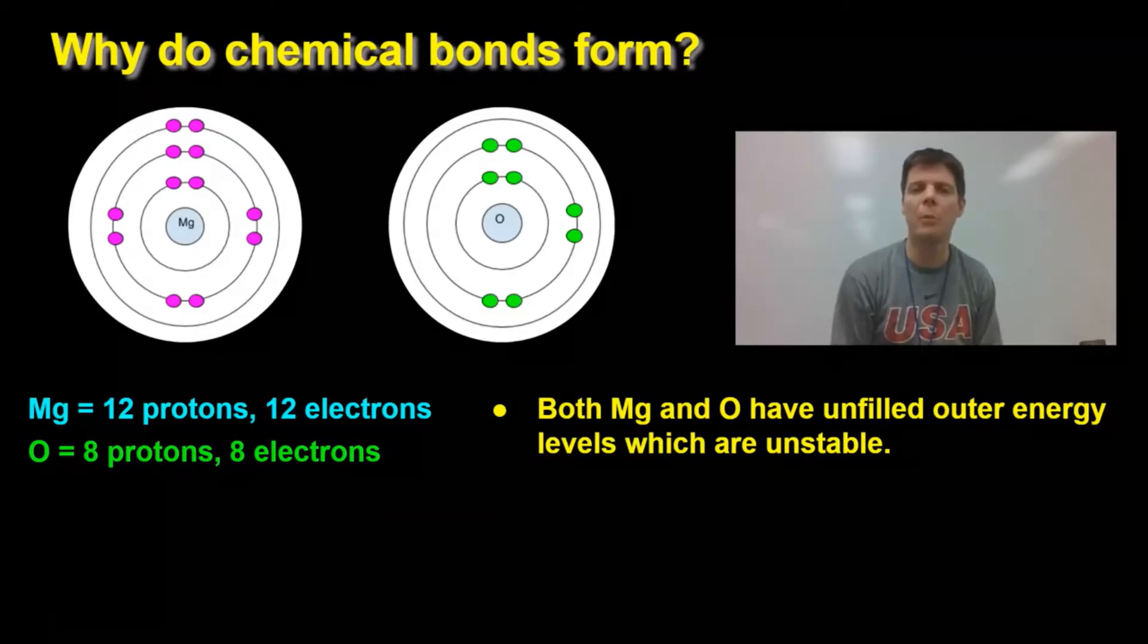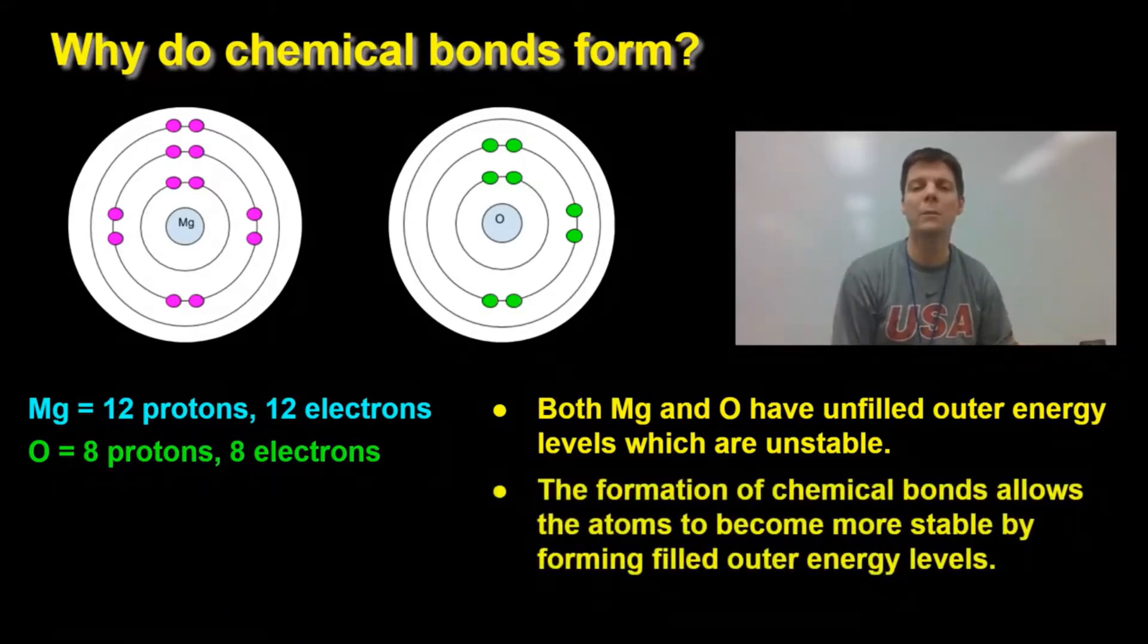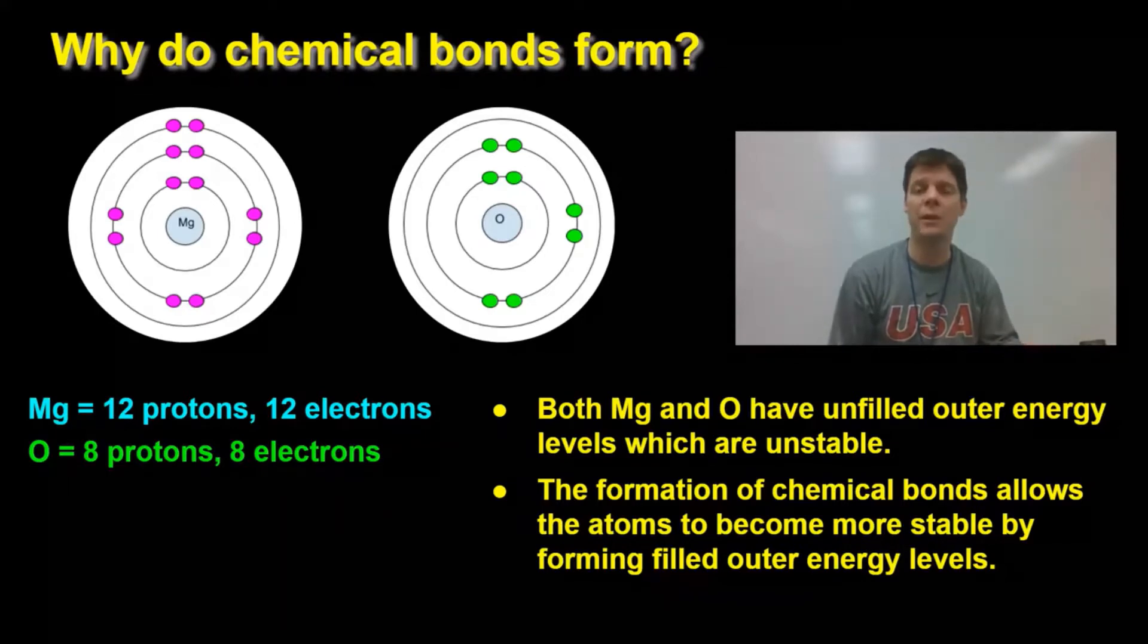So the formation of a chemical bond allows the atoms to become more stable. When magnesium loses 2 electrons, it loses its third energy level. And that means that the first energy level, the second energy level, are the ones that are completely filled. This makes a stable magnesium ion with a plus 2 charge.